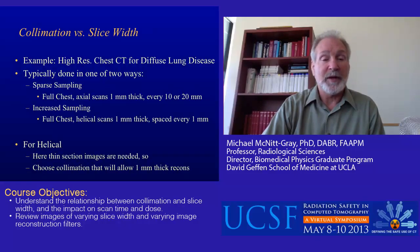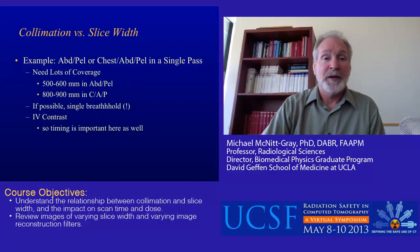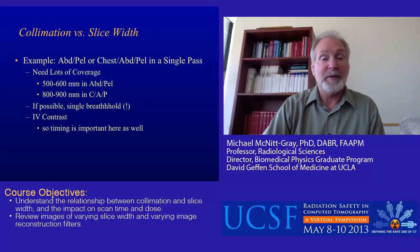One extended example is high-resolution chest CT for diffuse lung disease. The traditional approach is sparse sampling — 1 millimeter thick axial scans spaced every 10 or 20 millimeters through the whole chest. An increased sampling protocol does a full helical scan with 1 millimeter thick slices spaced every millimeter. For helical high-res chest, you must choose a collimation that allows 1 millimeter thick reconstructions. For abdomen and pelvis or chest-abdomen-pelvis in a single pass, you need 500 to 900 millimeters of coverage, ideally in a single breath hold, and IV contrast timing can be very important.